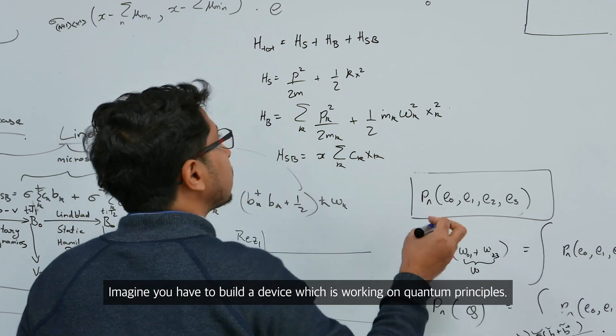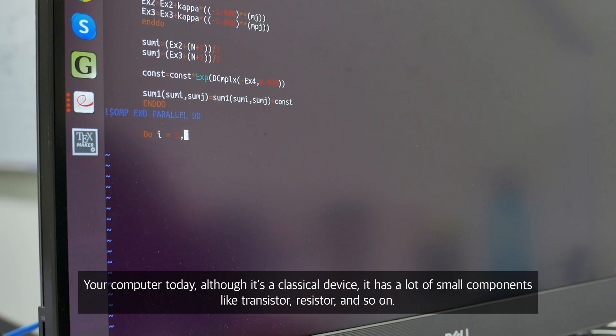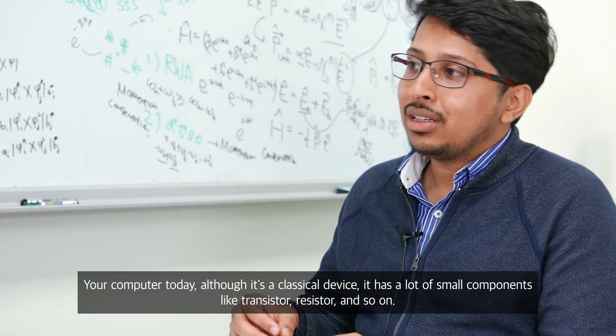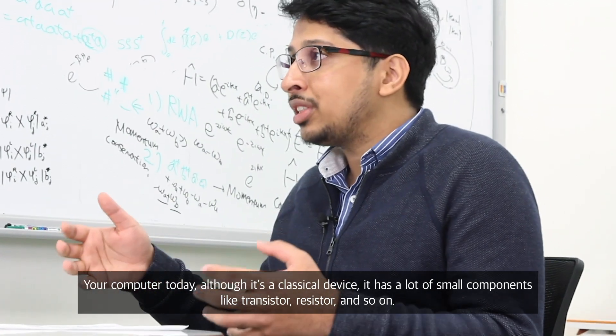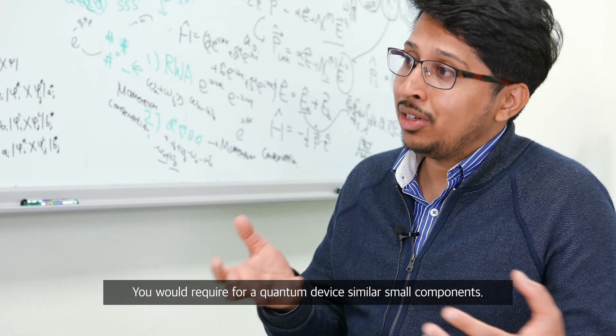Imagine you have to build a device which is working on quantum principles. So, your computer today, although it's a classical device, it has a lot of small components like a transistor, resistors and so on. You would require, for a quantum device, similar small components.